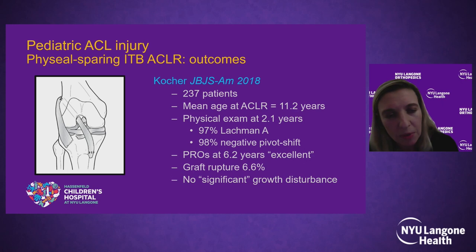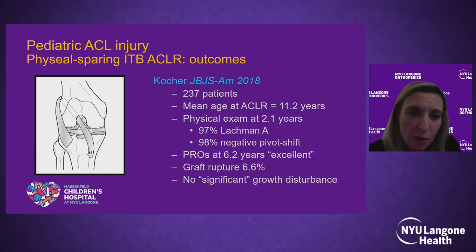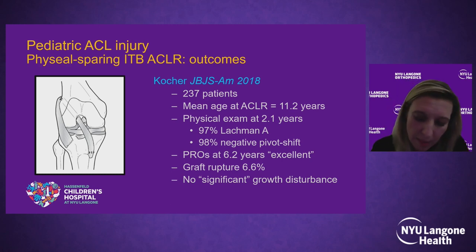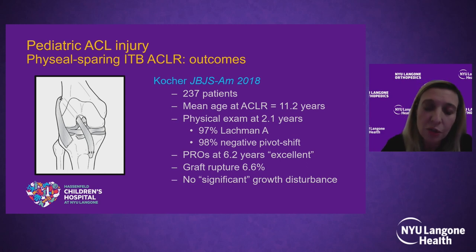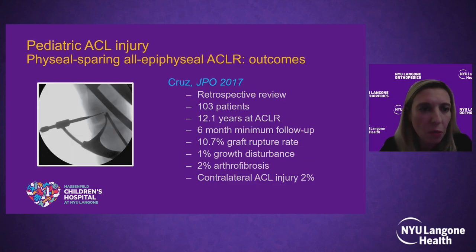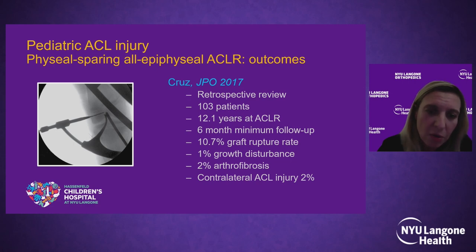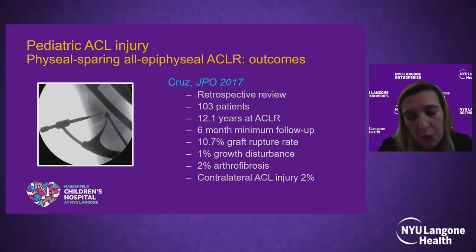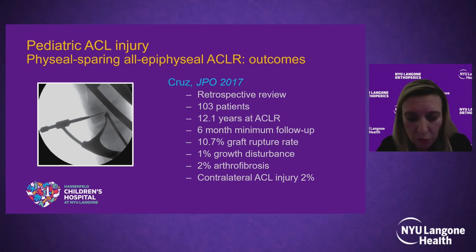In terms of outcomes from these techniques, recent studies have examined both. At Boston Children's Hospital, a 2018 study of 237 patients with average age 11.2 years showed at two years: 97% Lachman grade 1A, 98% negative pivot shift, excellent patient-reported outcomes at six years, 6.6% graft re-rupture rate, and no significant growth disturbance. For the all-epiphyseal technique, the CHOP experience in Philadelphia reviewed 103 patients aged 12 years at surgery with six-month minimum follow-up, showing a 10.7% graft rupture rate, some growth disturbance, arthrofibrosis, and contralateral ACL injury.